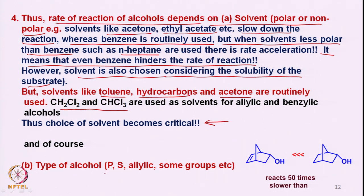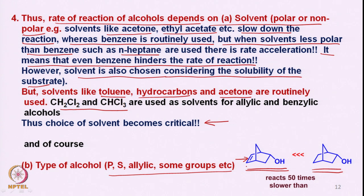As discussed, the reaction outcome also depends on the type of alcohol — primary, secondary, allylic, etc. An interesting example shows one alcohol reacting 50 times slower than another; the presence of a double bond makes a difference, as the pi bond can compete with the alcohol for adsorption at the silver carbonate Celite surface. We will stop here and continue with reactions of different types of alcohols with Fetizon's reagent in the next class.